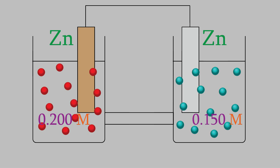But look closely. Although the electrodes are the same, the concentrations of the two solutions are different, and that's going to make it possible for a voltaic cell to generate an electric current. Here's why.